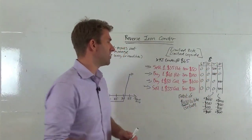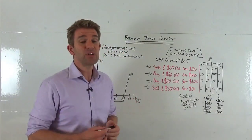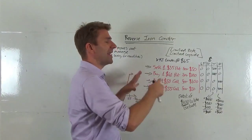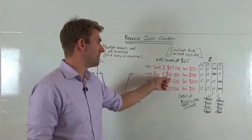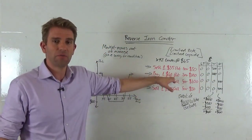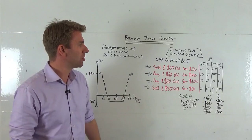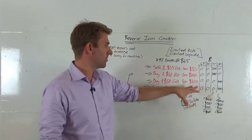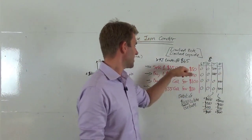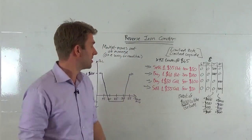Now let's say the stock expires at $30. The $35 put has $5 of value times 100 shares = $500 — but unfortunately we sold that one, so we lose $500 there. The $40 put is the good one — it has $10 of value, times 100 shares = $1,000. Both calls expire worthless. So the outcome: we made $1,000, lost $500 on the sold put, and subtract the $100 net cost of the trade — giving us $400 profit.